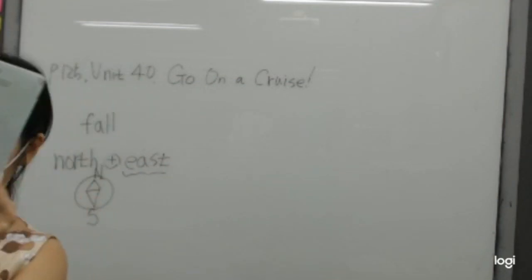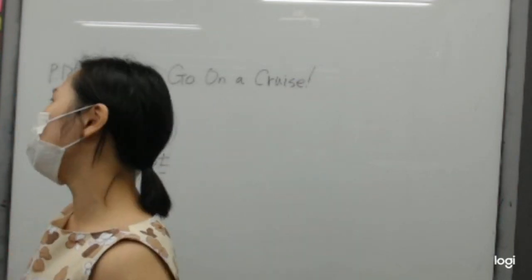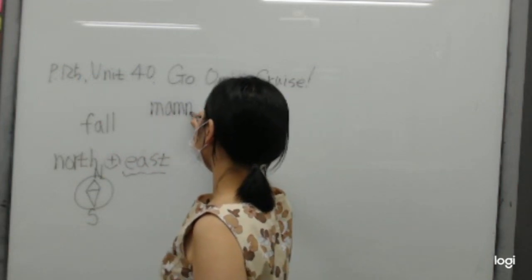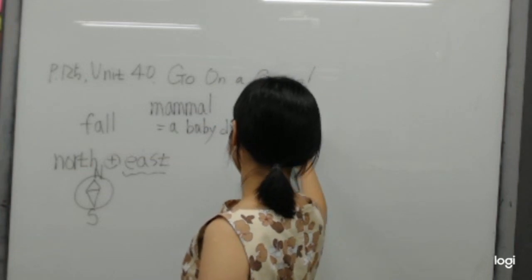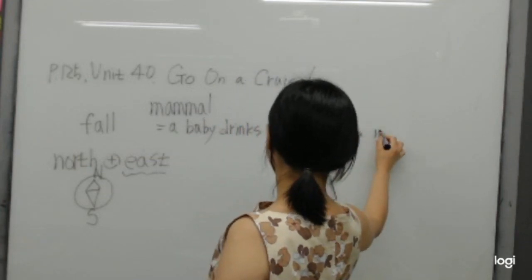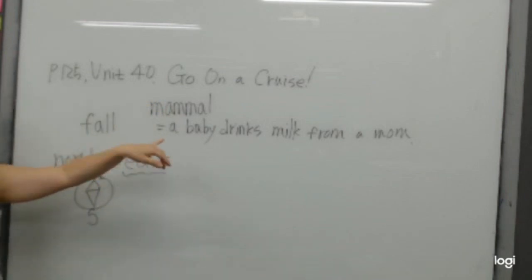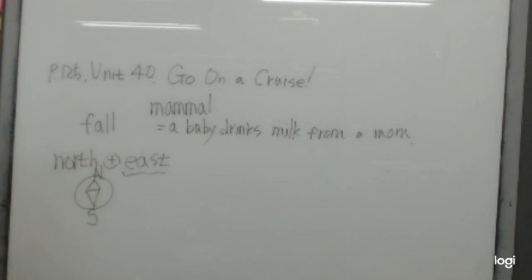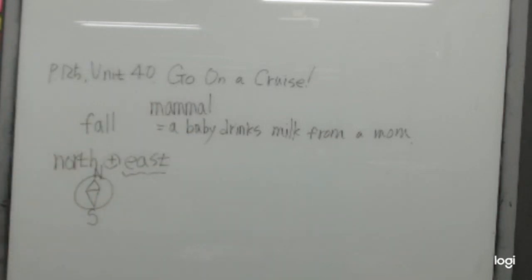And guys, what is mammal? A baby drinks milk from mom. It's interesting. Mammal — a baby drinks milk from mom. So whale — do you think whale is a fish? No. Whale is an animal, right? Because a baby whale drinks milk from their mom. Dugong — yes, dugong. Dugong and manatee — they are mammals, right? A baby drinks milk from their mom — it's a mammal.